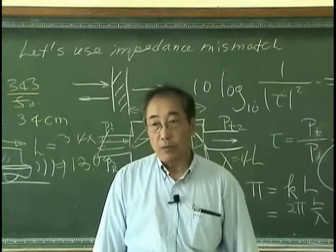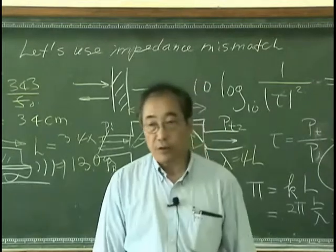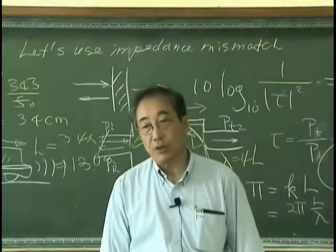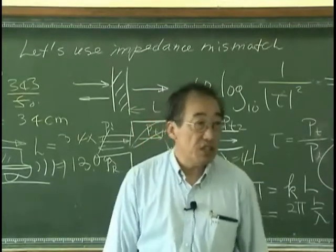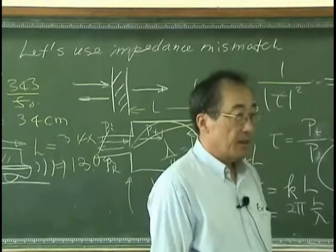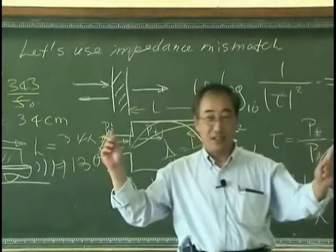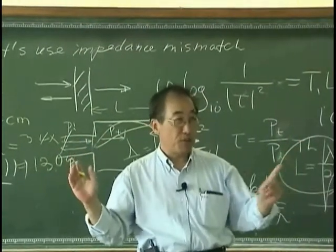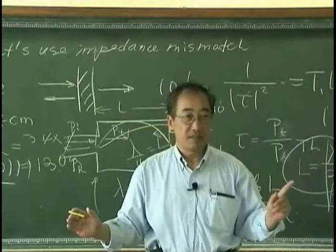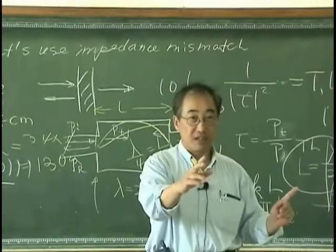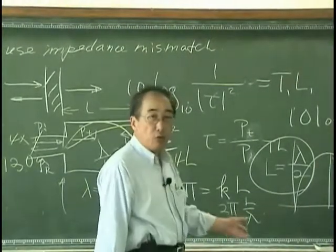What if I want to filter out 400 hertz frequency? The wavelength corresponding to 400 hertz would be about 70 centimeters. We have two parties: one arguing 34 multiplied by 4, and the other saying 34 divided by 4. Which one is correct, and where did I make a mistake?